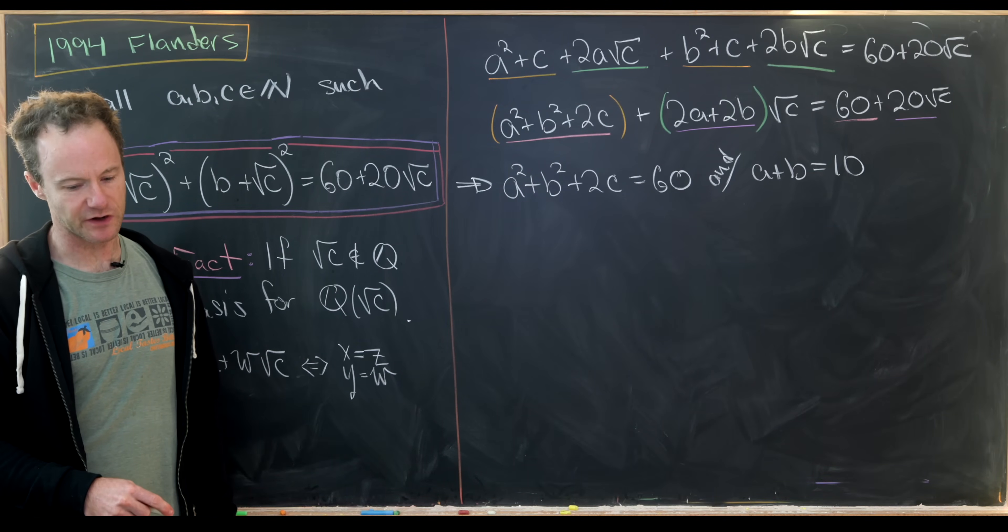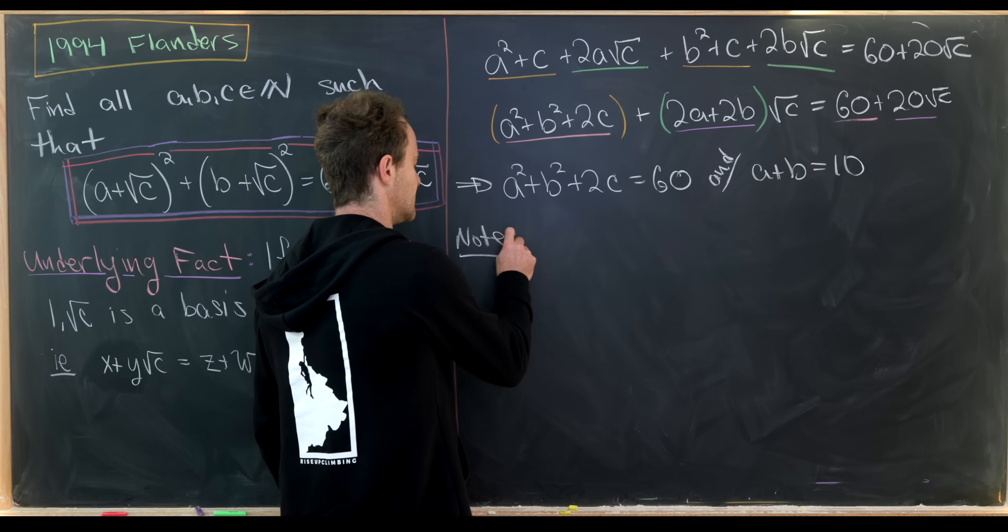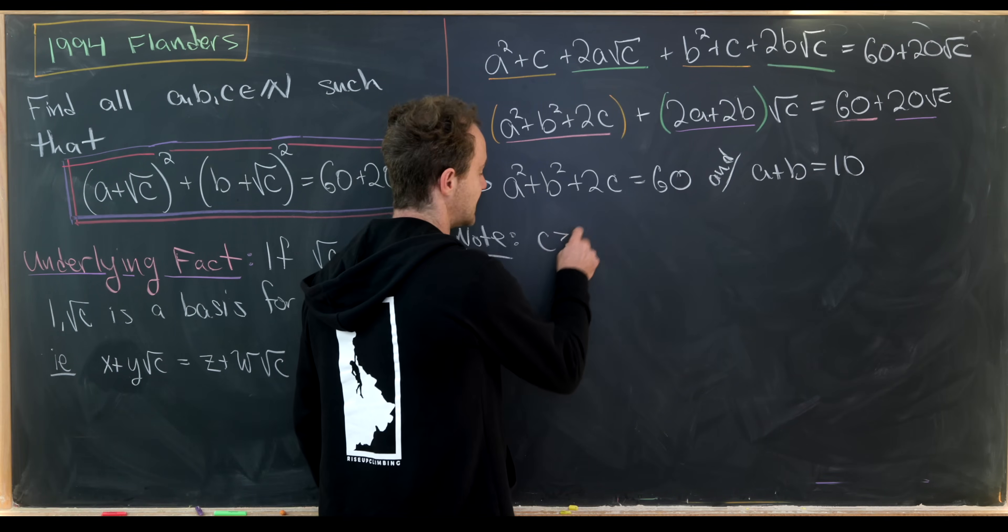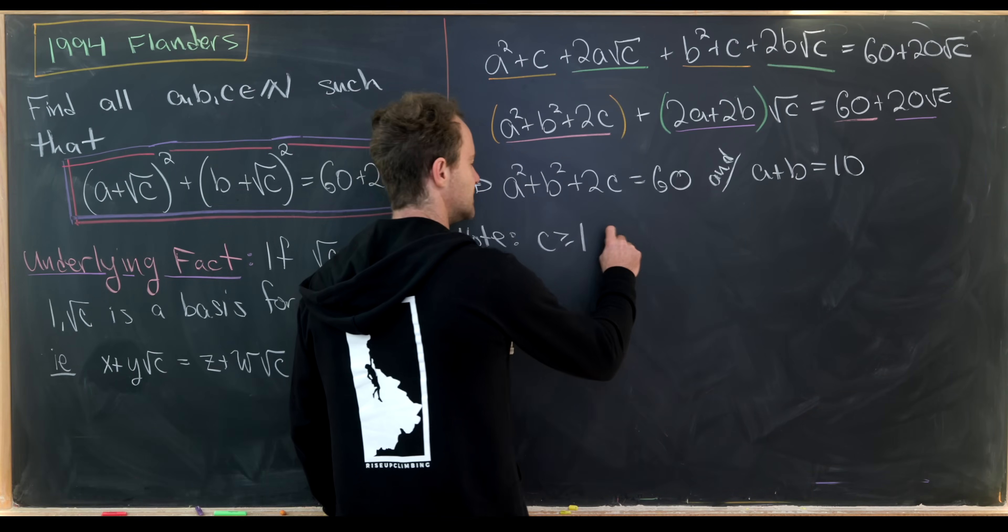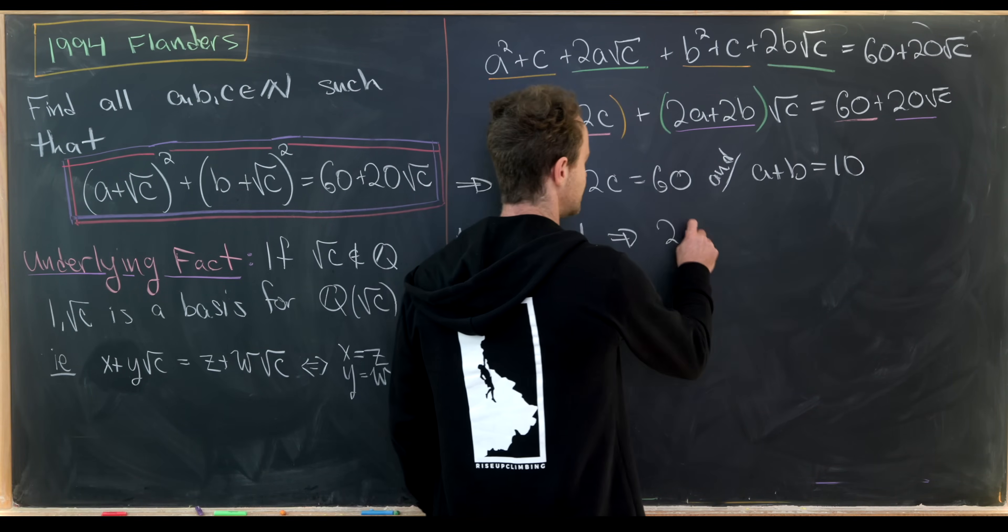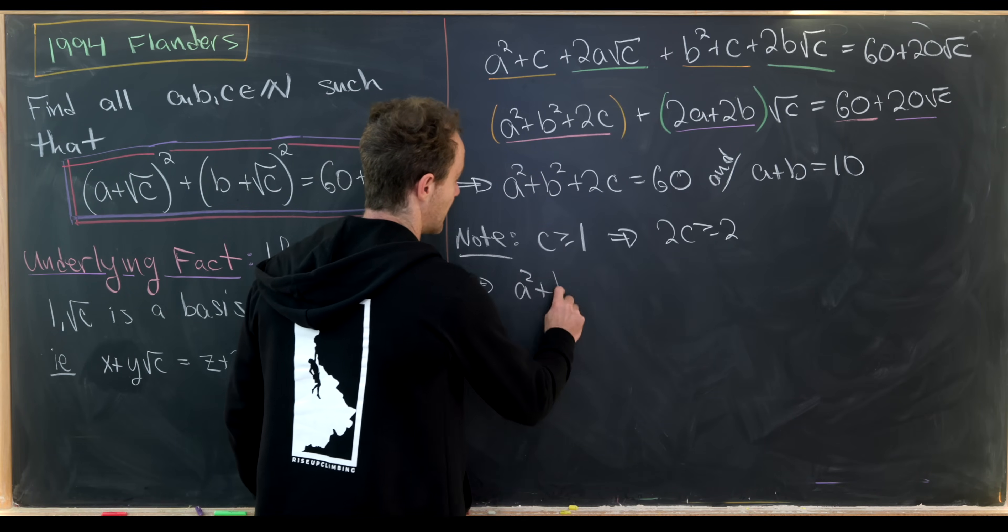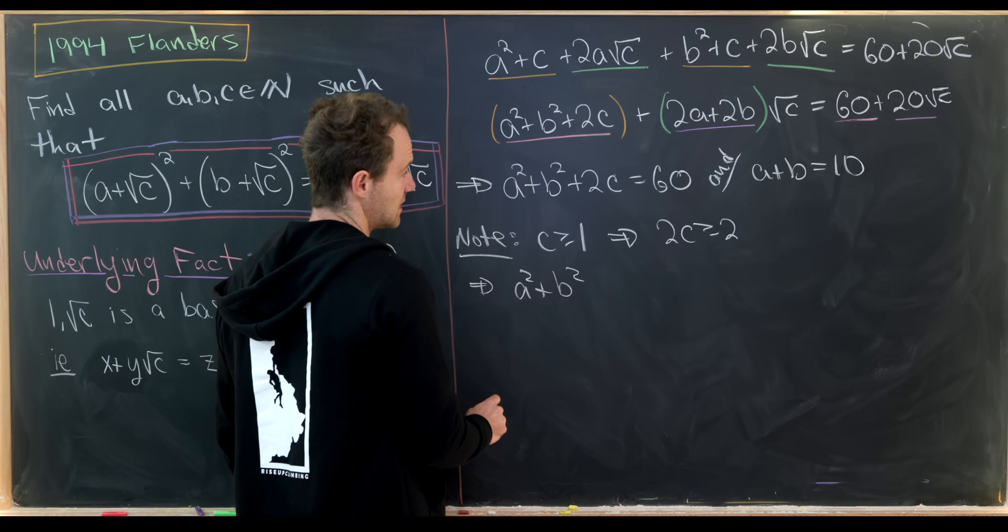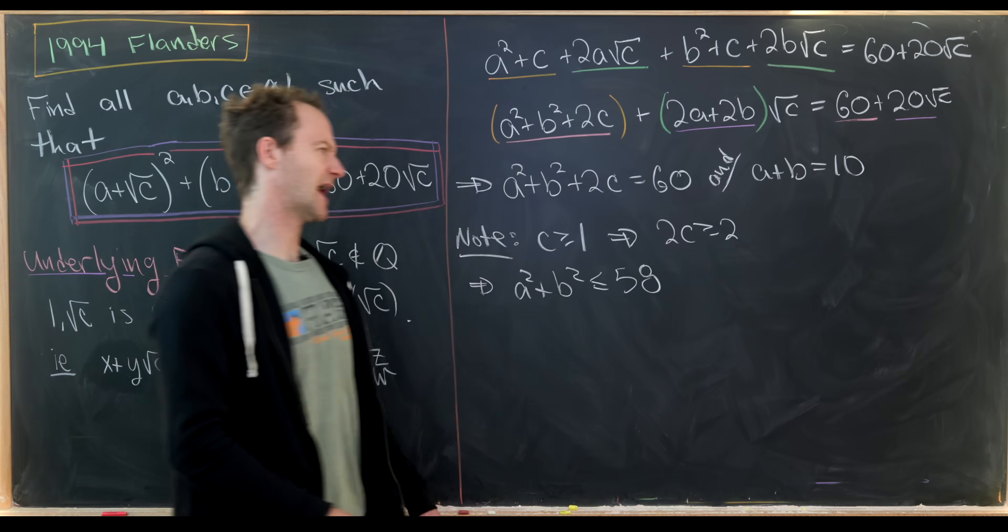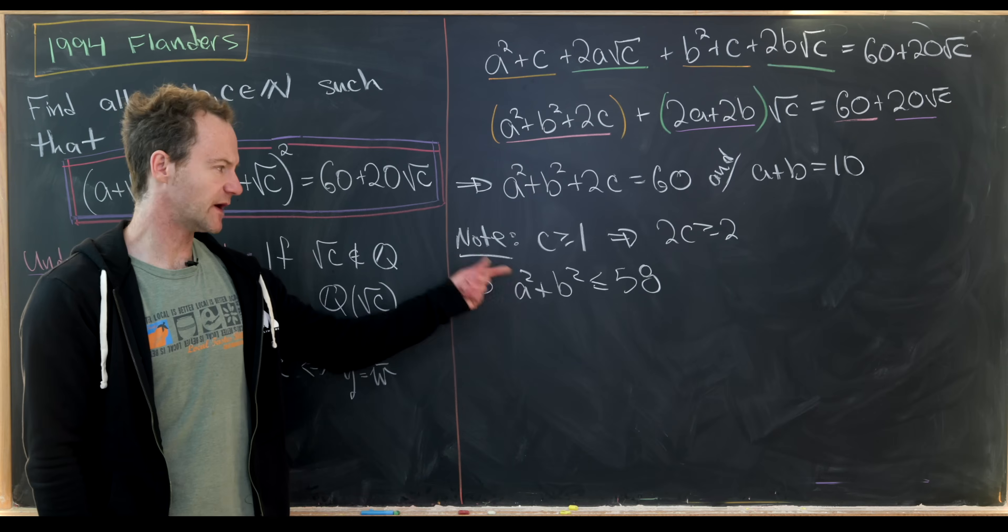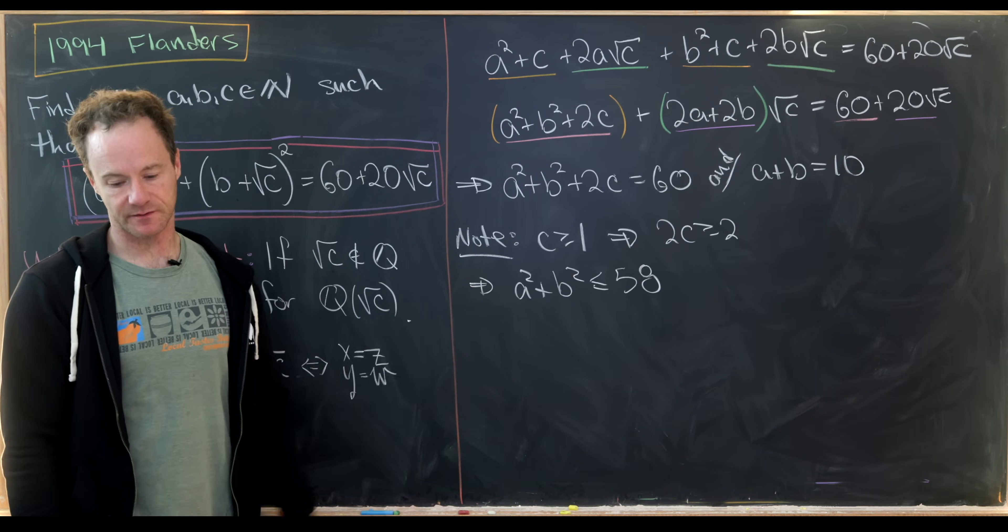Okay, so now where do we want to go from there? Well, let's start with an inequality. So let's notice that immediately we know that c is bigger than or equal to 1, given that it's a natural number. So that means that 2c is bigger than or equal to 2. And thus, a squared plus b squared must be less than or equal to 58. Because we're subtracting that 2 from both sides. And also, a squared plus b squared is always bigger than or equal to 4 as well.